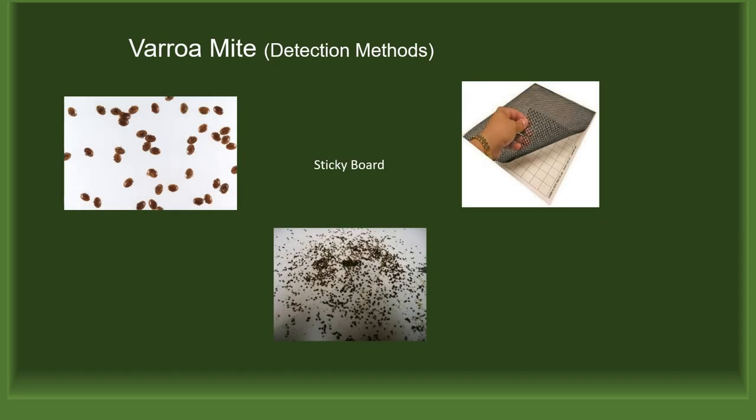As beekeepers, one of the major tasks we have is to monitor the mite count in the hive. If you observe mites by one of the means explained earlier, you need to get a count of the mites in the hive. You can do this by one of three methods: you can use the sticky board or a cooking oil method, as described on page 65.